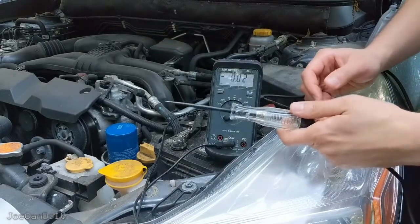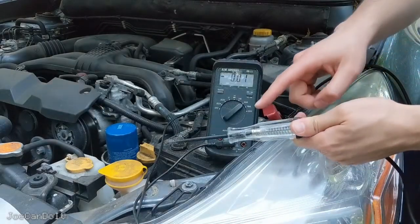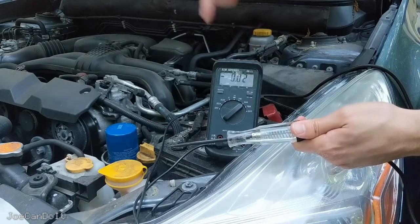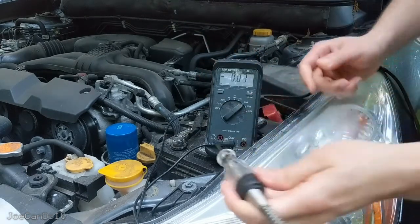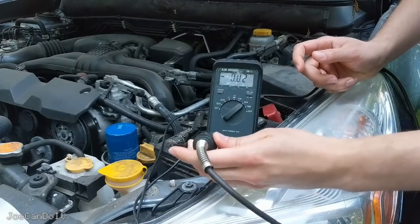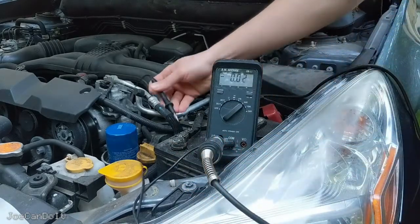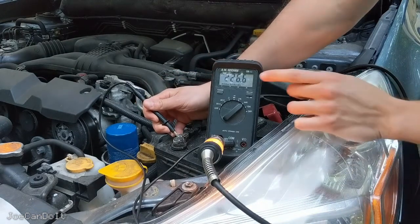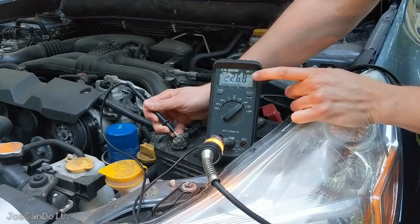So the first thing we're going to do, we're going to measure the current draw from the classical test light. Here I have my multimeter and my car's battery and my car all set up to do this. So let's take the measurement right now. And the current draw from our classical test light that I have is around 227 milliamps.